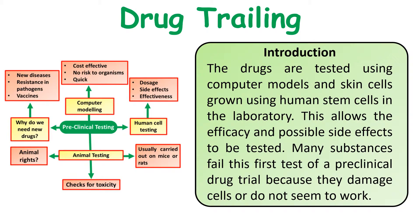Drug trials are needed to test drugs to make sure that they are safe for humans to use. The drugs are firstly tested using computer models and skin cells grown using human stem cells in the laboratory. This allows any possible side effects and toxicity to be looked at. Many substances fail this preclinical trial because they don't seem to work on the cells, or in worst cases they will kill the cells off.